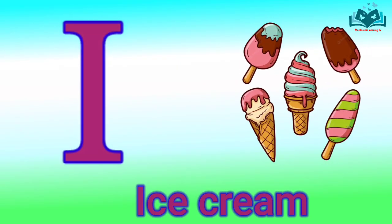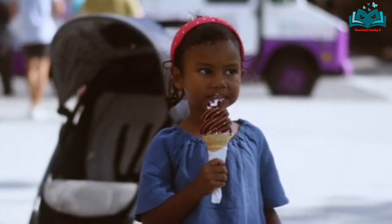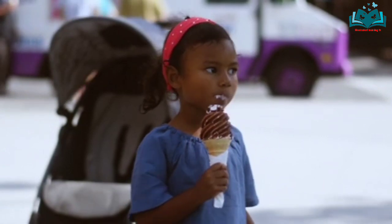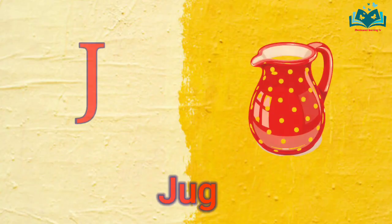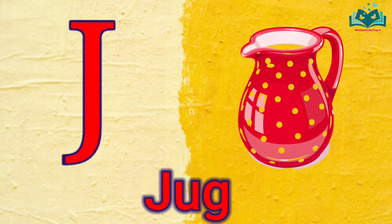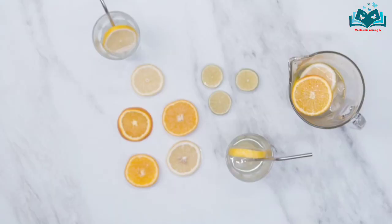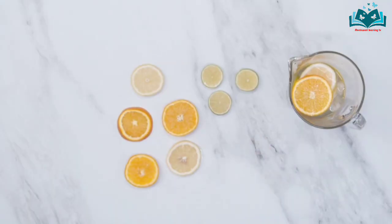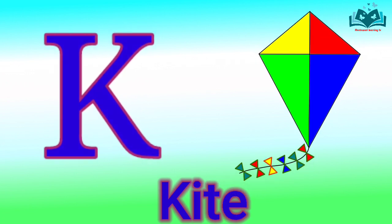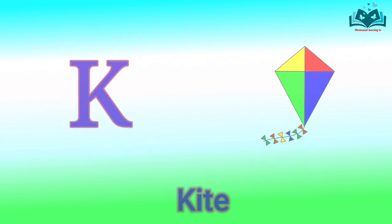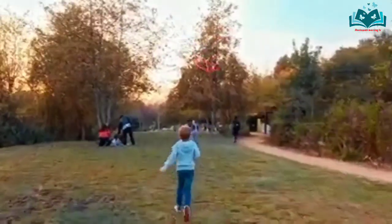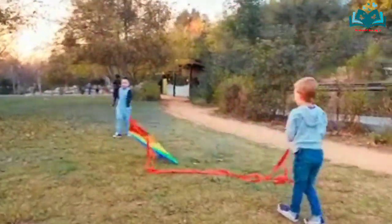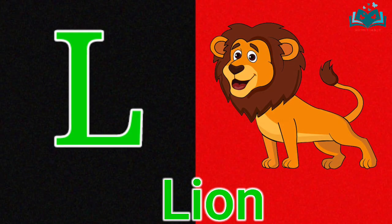I for Ice Cream. J for Jug. K for Kite. L for Lion.